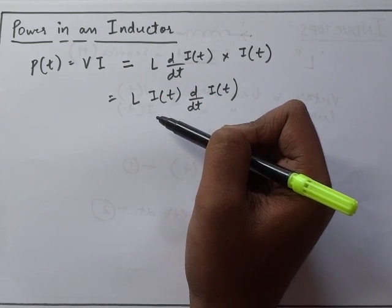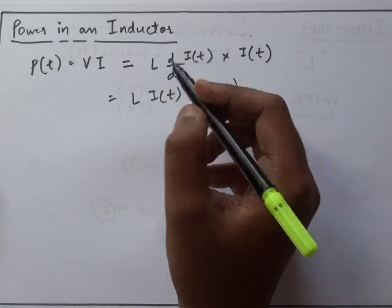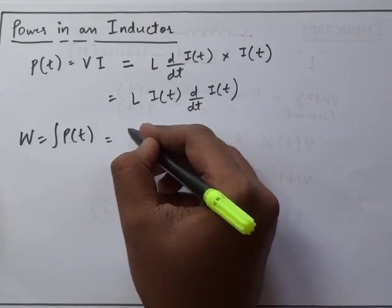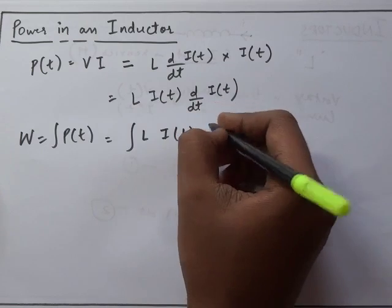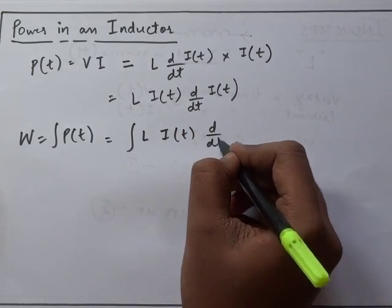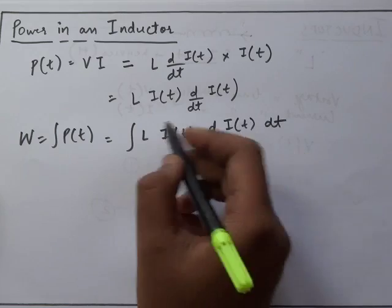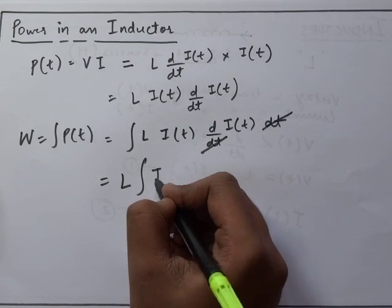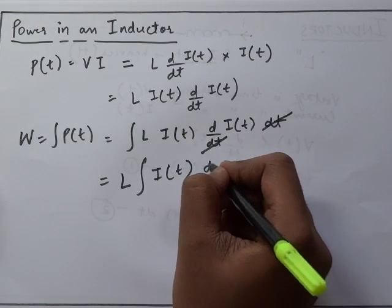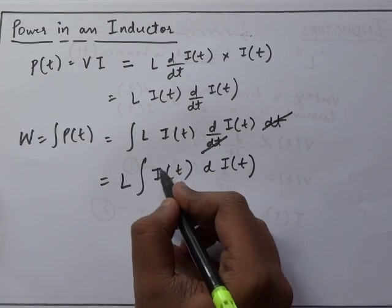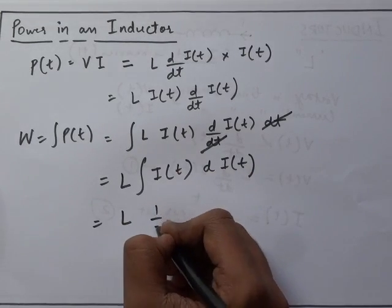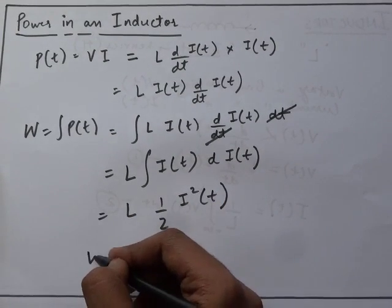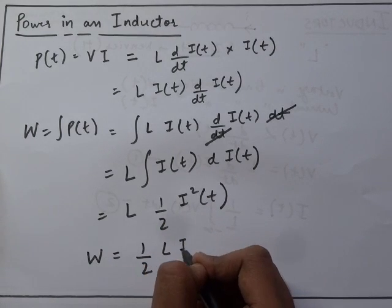Energy stored in an inductor is of the form of electromagnetic field. That energy is given by W = ∫P(t)dt. Substituting this equation here, I get ∫L·I(t)·(dI(t)/dt)dt. Simplifying, as L is a constant we can take it outside: L∫I(t)dI(t). Now integrating I(t) with respect to I(t) we get L·(1/2)·I²(t).